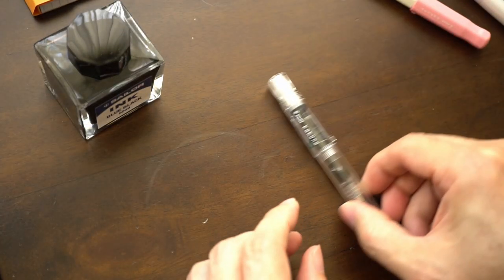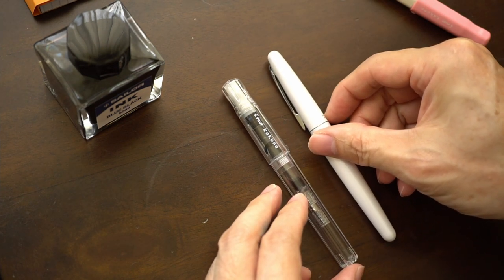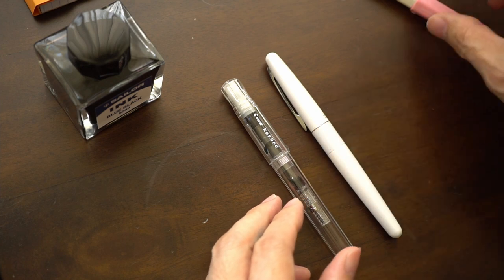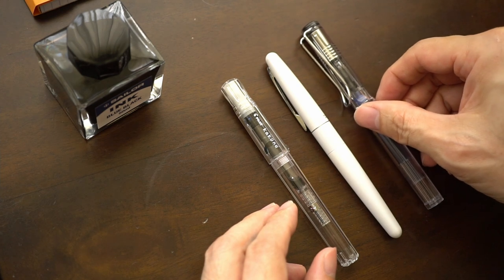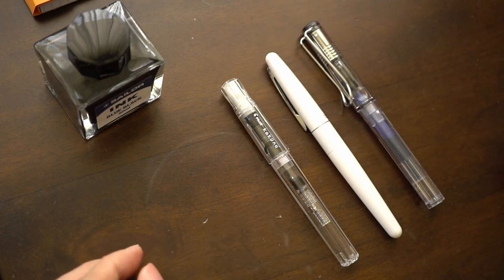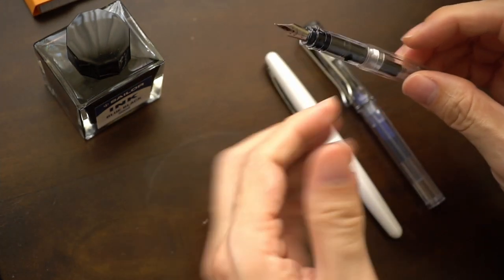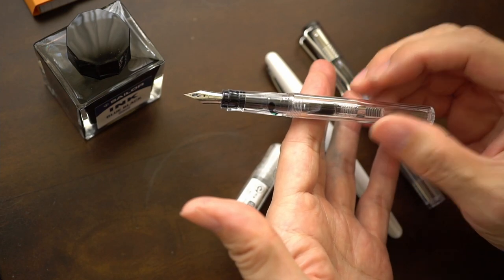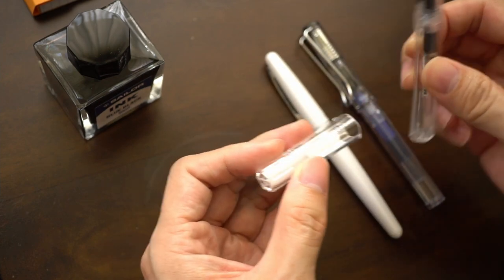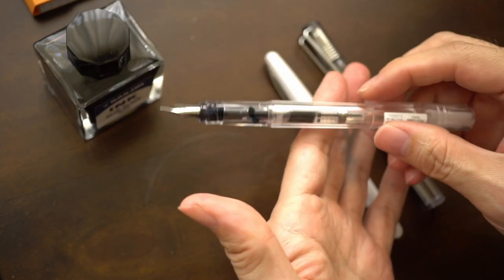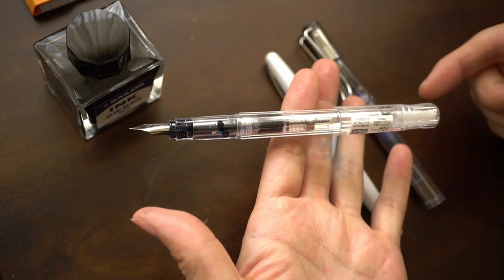I also have some other pens down here so bringing back the Cocoon slash Metropolitan to kind of give you an idea of the length of the Kakuno. I have Lamy Safari down here so they're all quite comparable. I didn't really speak about this but balance wise it is a very well balanced pen like nearly you know perfect 50-50 weight distribution. If you post the pen I don't think it would affect the balance that much because the cap is very very light.